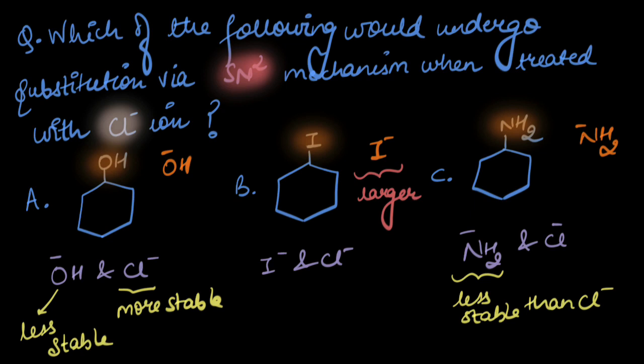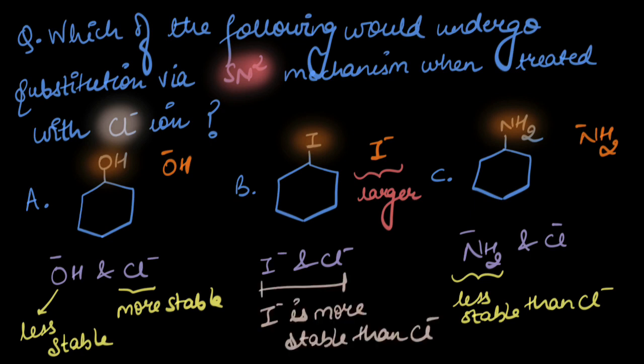What are we left with? Let's compare I⁻ and Cl⁻. Iodide ion has a larger size than the chloride ion, so the negative charge would be more stable on the iodine atom. Therefore, the less stable chloride ion can attack and expel the more stable iodide ion. The one that would actually react with chloride ion is the second one.